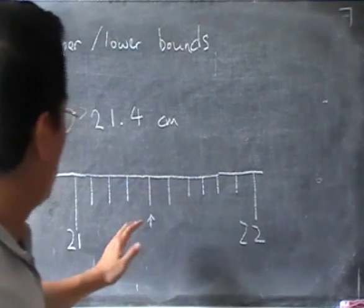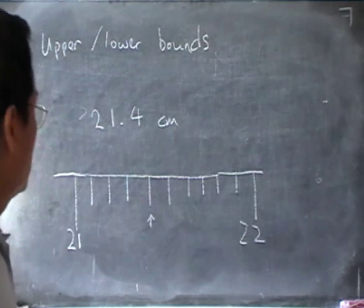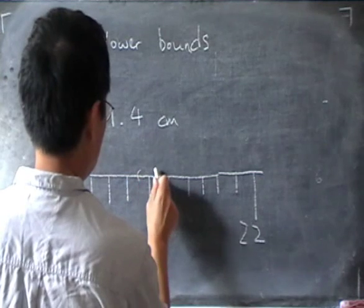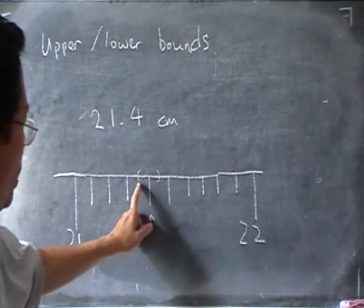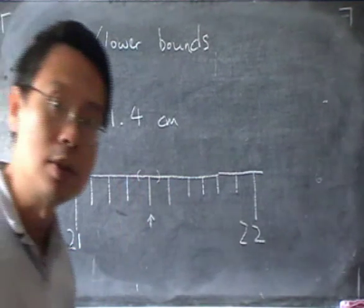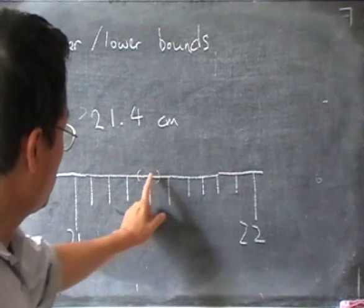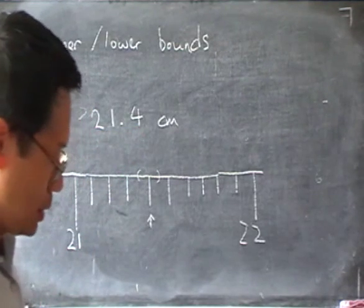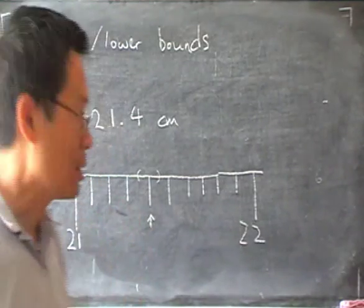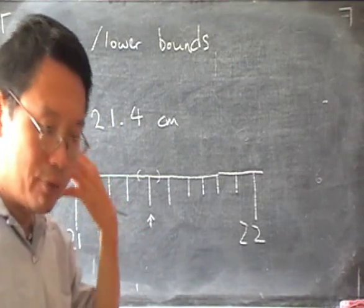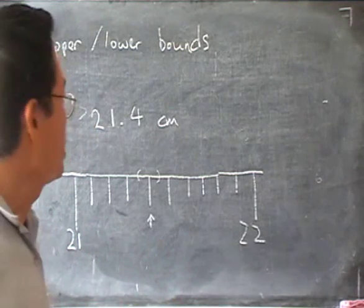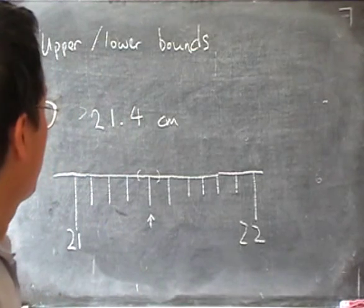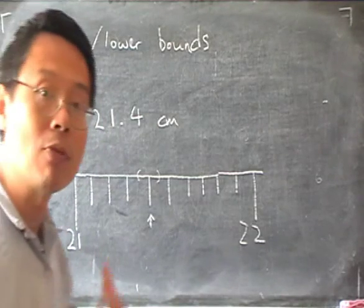Now, but it does not mean that the book is exactly that long. Because maybe it's just somewhere around that mark. So maybe the book can be somewhere in between here and here, in between the halfway point of these two intervals. So as long as the length goes up to anywhere around here, we call it 21.4 cm. It's always some kind of rounding off involved.